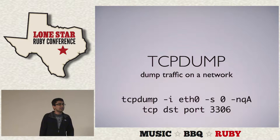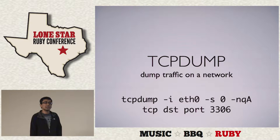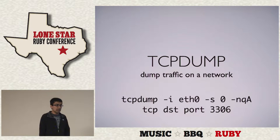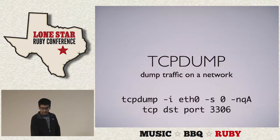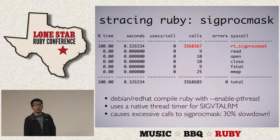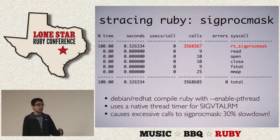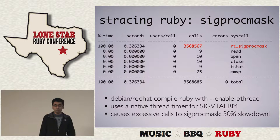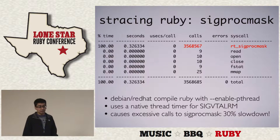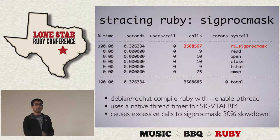Question: Does RVM enable pthreads when building Ruby? RVM does not enable pthreads by default. The only reason Debian does this is because --enable-pthread is recommended only if you're using Ruby TK. Debian has to accommodate everybody, whereas most of us don't use Ruby TK, and RVM and other builds don't enable it by default.